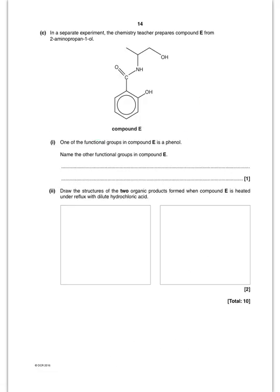So moving on to part C then. It's told me this has got a functional group of phenol, which is that one. What else do I have? Well, I've got a primary alcohol there and I have got an amide group there.